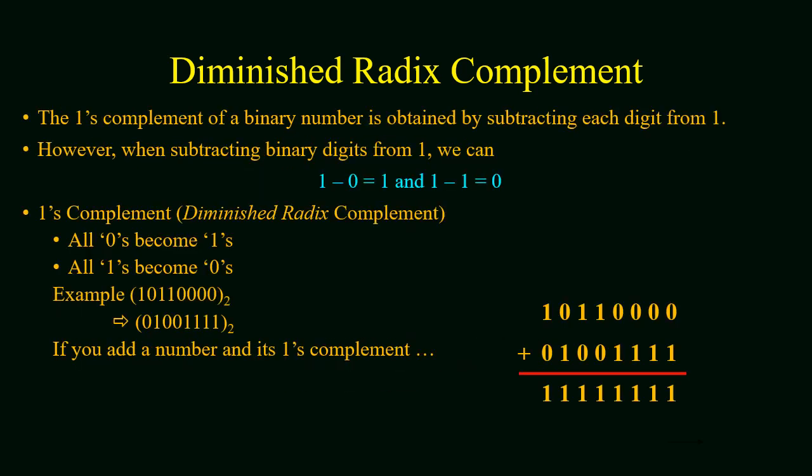Looking at the previous example of 1's complement, the 1's complement of a binary number is obtained by subtracting each bit from 1. Subtracting a binary digit from 1 gives two possible cases: 1 - 0 = 1 and 1 - 1 = 0. So simply to find 1's complement, all 0's become 1's and all 1's become 0's.